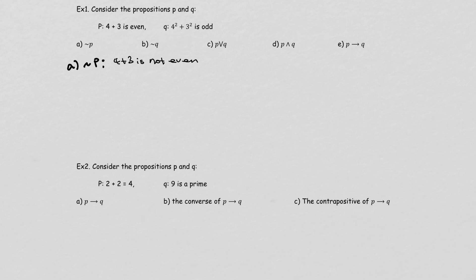What about not Q? Not Q means '4 squared plus 3 squared is not odd.' Q is a true statement — that's 16 plus 9, which is 25, and that's odd, which makes Q the true statement. So not Q is going to be the false statement.